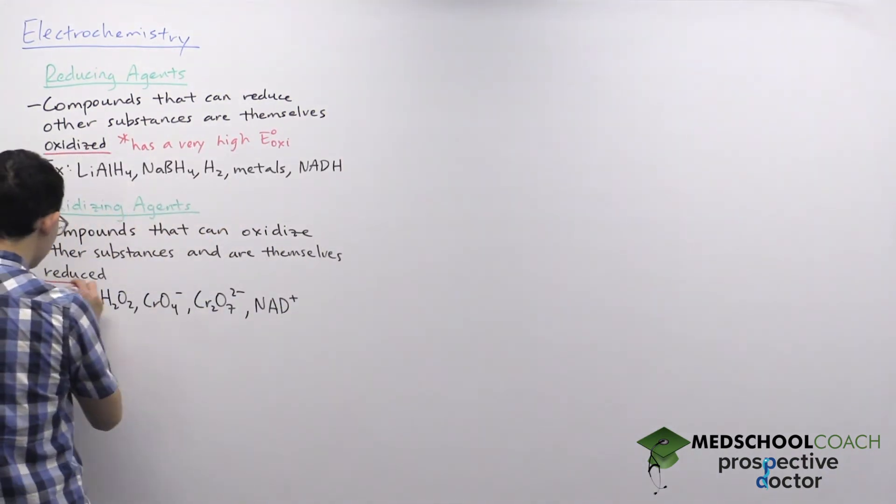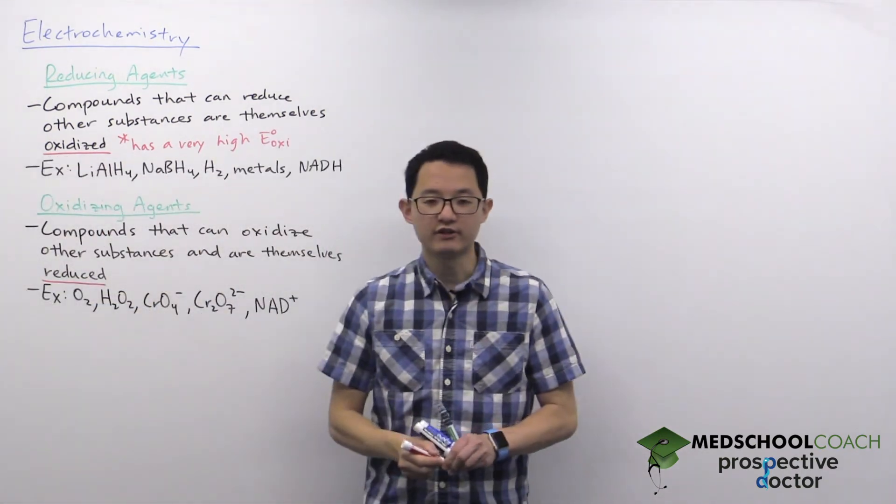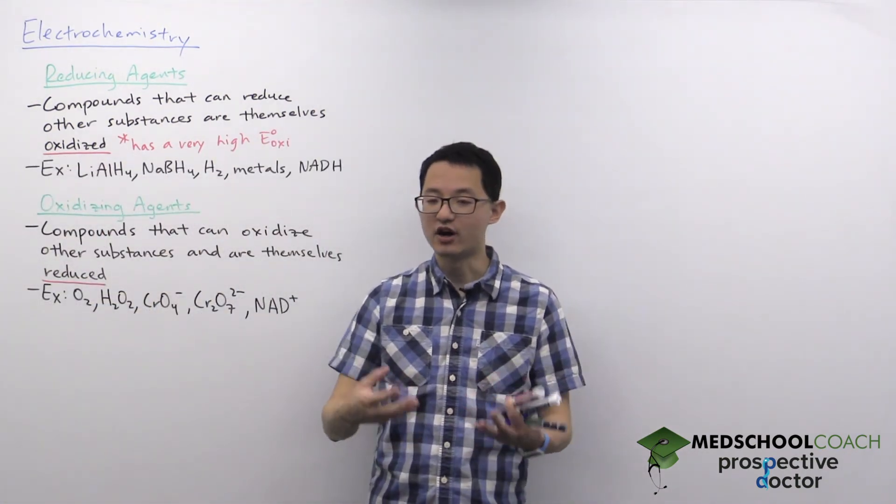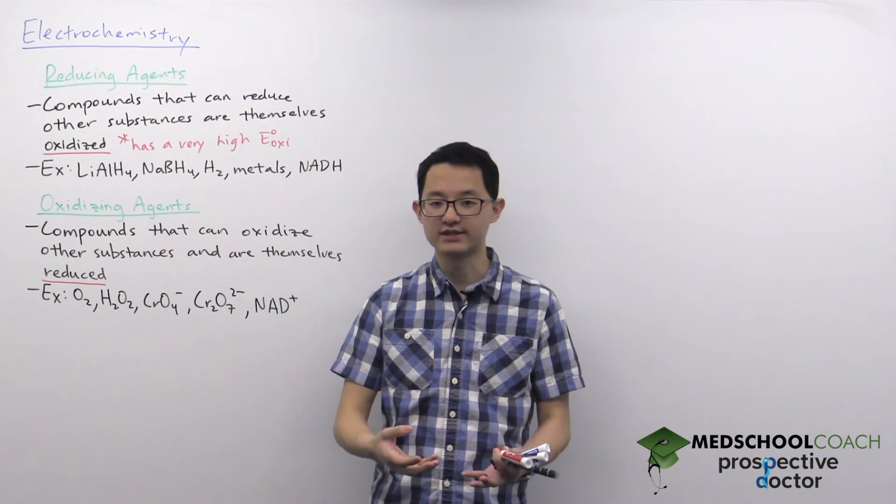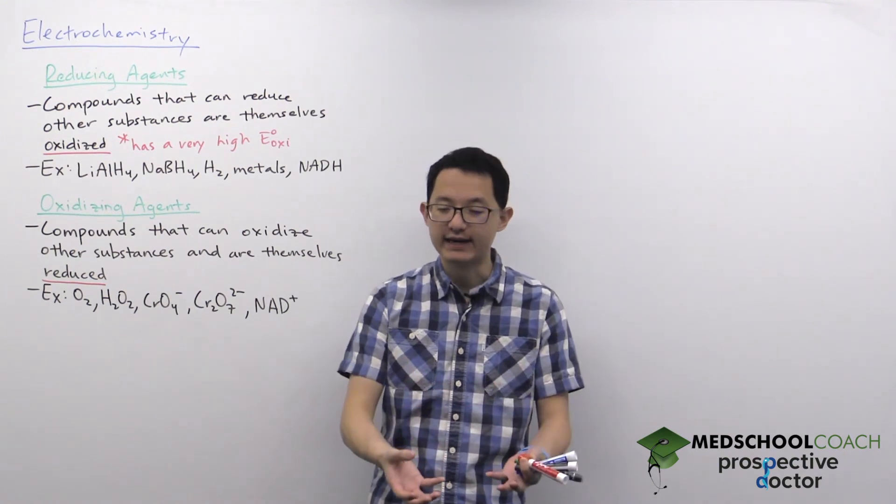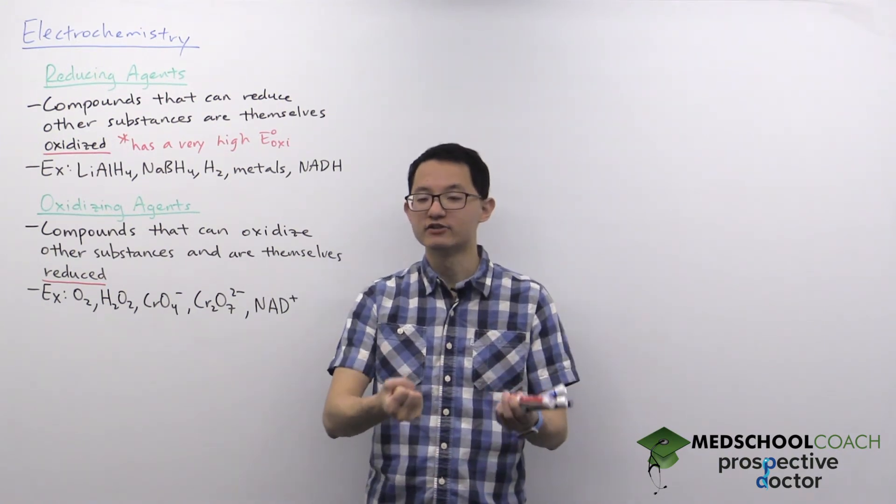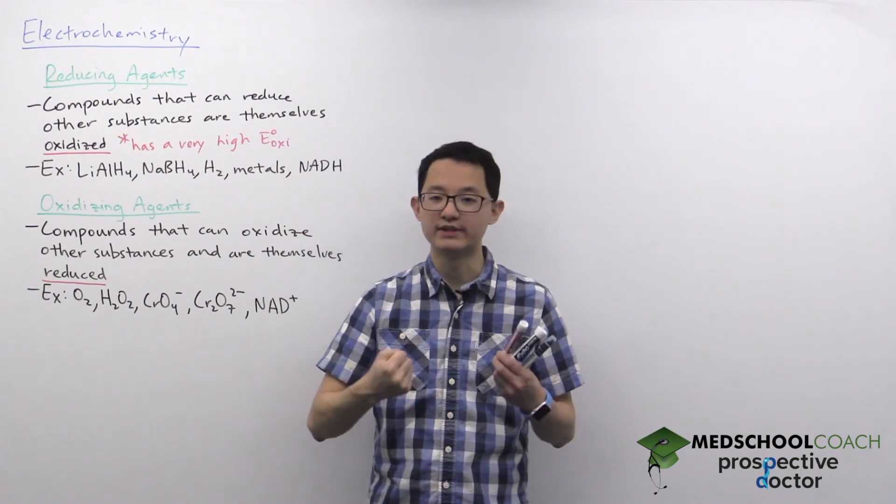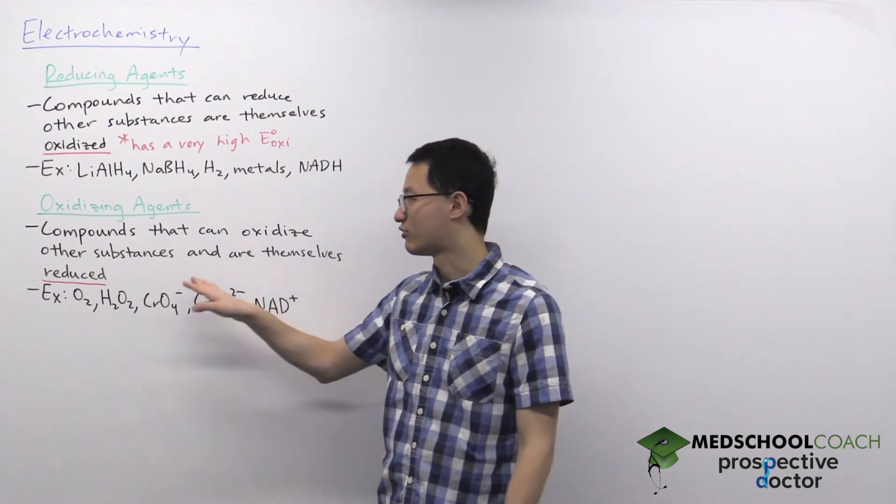In order for an oxidizing agent to cause other compounds to be oxidized, it has to take electrons from them, and those electrons that the oxidizing agent takes, it will gain itself, which is why the oxidizing agent is reduced.